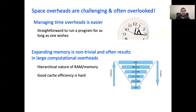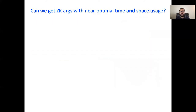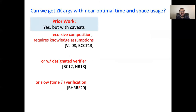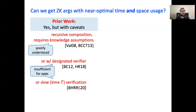Let's talk about prior work on getting time and space-efficient provers. There are some constructions known, but all of them have undesirable caveats. For example, Valiant and Betansky et al. give constructions from recursive composition, which requires knowledge assumptions that are poorly understood. Betansky-Kiesa and Holgrim and Rothblum give constructions with a designated verifier, which means that the verifier needs to keep some secret state — undesirable for applications. In a prior work with the same set of co-authors, we overcome these two limitations, but the verifier is linear, again undesirable for applications.